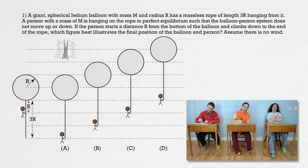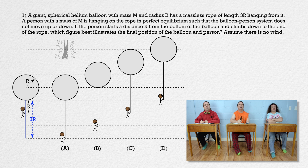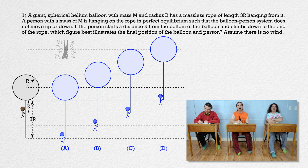Question 1. A giant spherical helium balloon with mass M and radius R has a massless rope of length 3R hanging from it. A person with a mass of M is hanging on the rope in perfect equilibrium such that the balloon-person system does not move up or down. If the person starts a distance R from the bottom of the balloon and climbs down to the end of the rope, which figure best illustrates the final position of the balloon and person? Assume there is no wind.